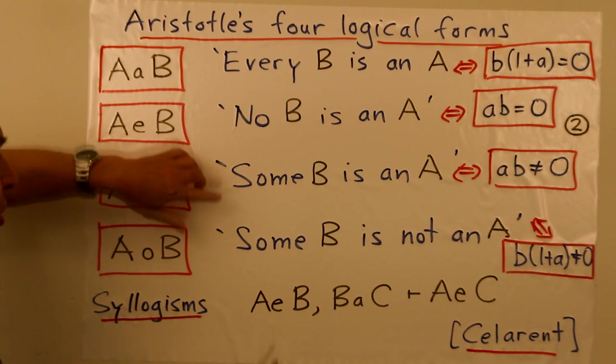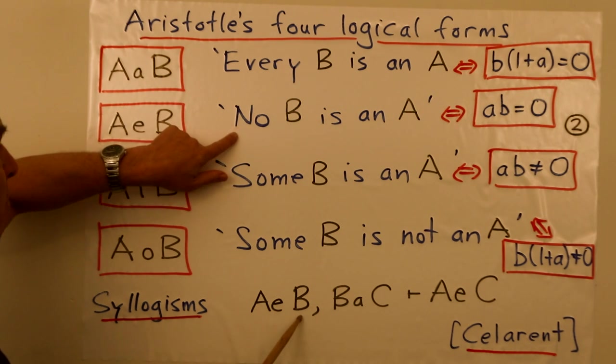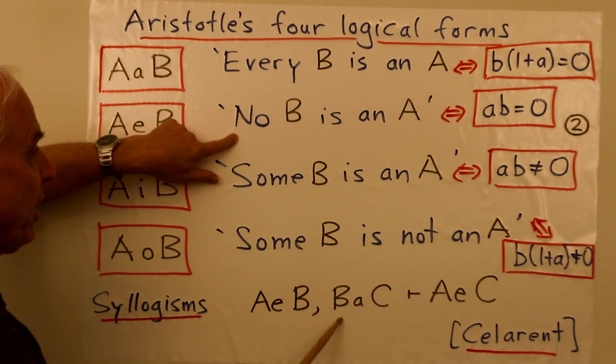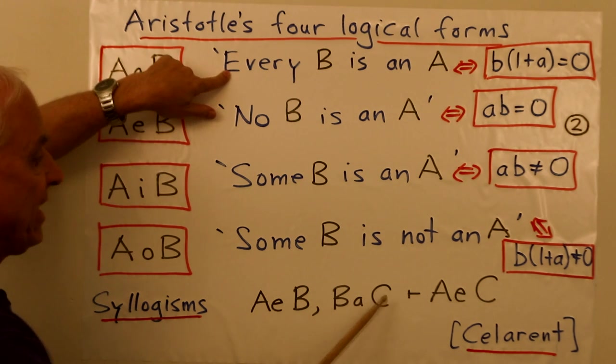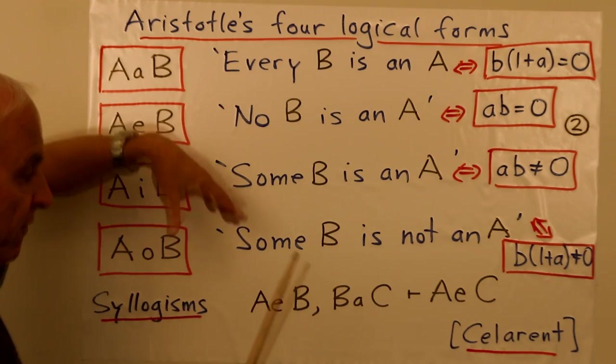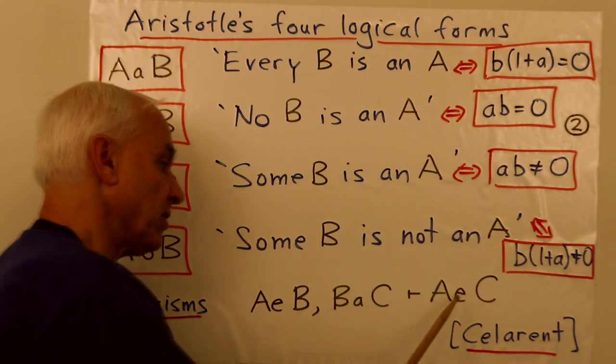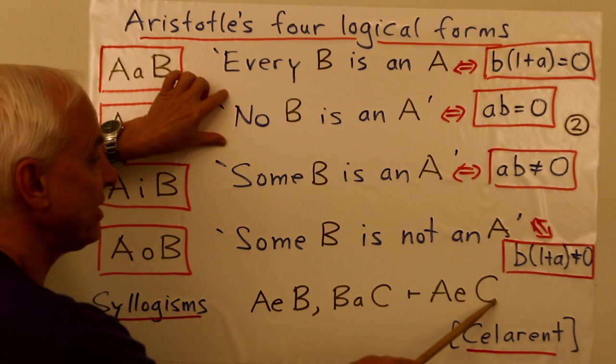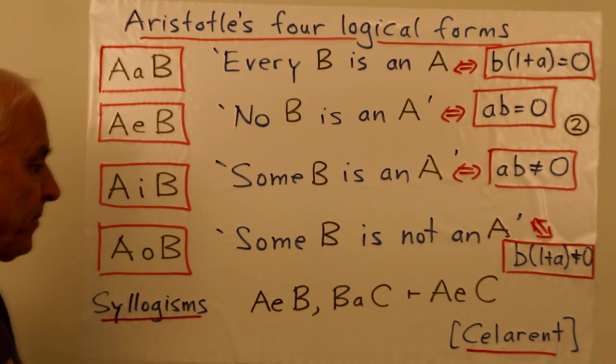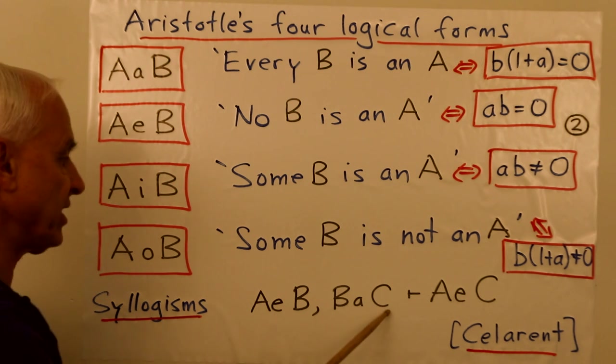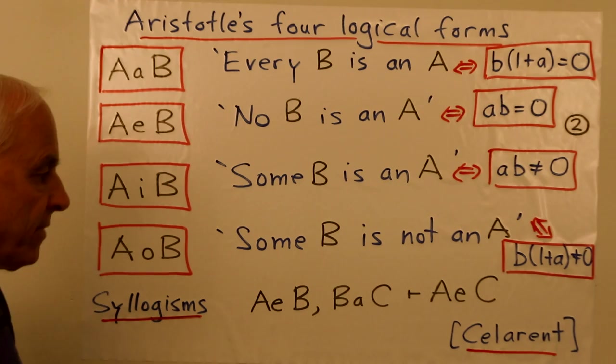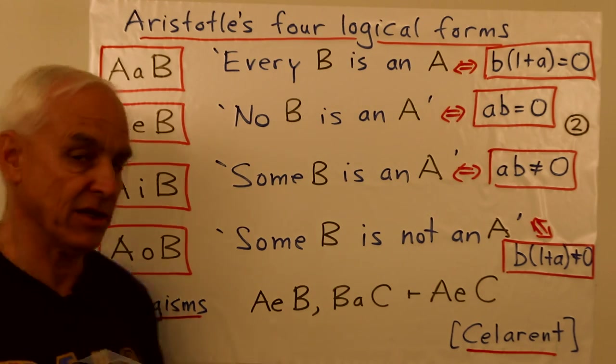So if we interpreted this in English, the E would be no B is an A. So we're assuming no B is an A. And this one here, we're assuming that every C is a B. From those two premises, we should be able to conclude A E C, which is this one here, no C is an A. So no B is an A, but every C is a B, then no C is an A. That's one of his syllogisms.